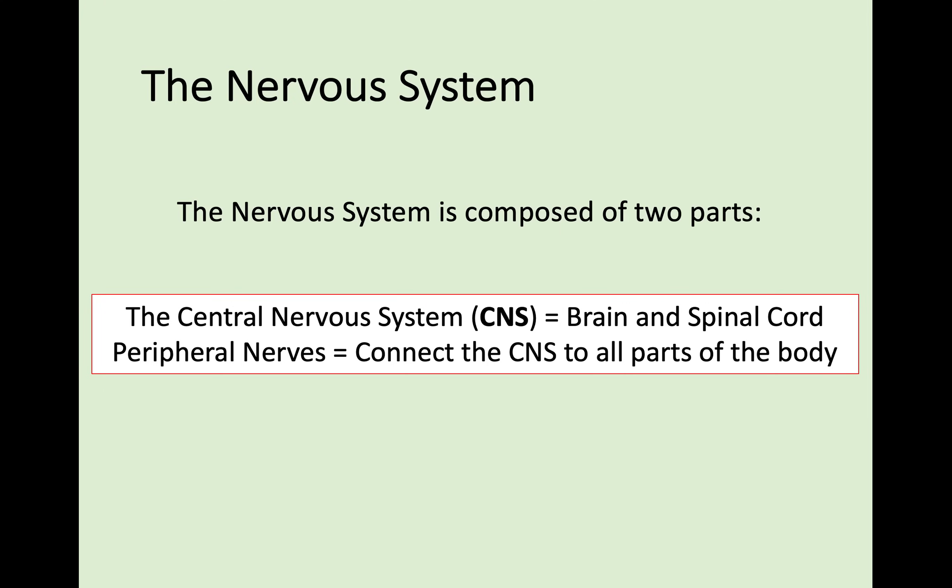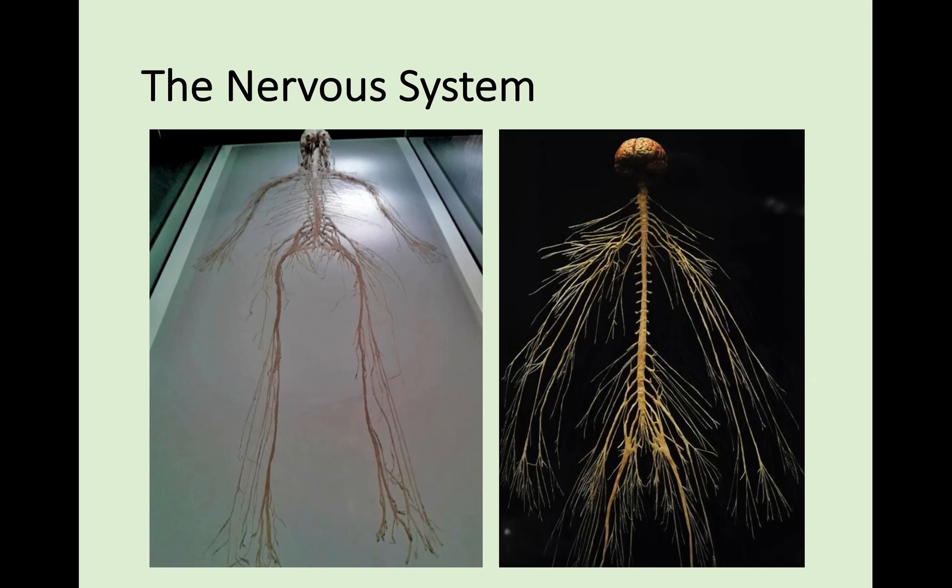We're going to look at how that works in a minute. If you actually had a look at the nervous system in terms of being extracted from you, this is really what you would see. Especially in the picture on the right, you can clearly see the brain and the spinal cord, but all these peripheral nerves are all connected together as well.